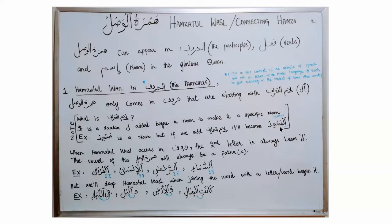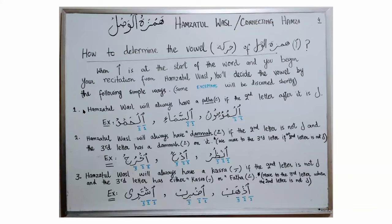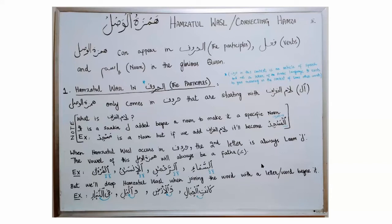Hamzat al-Wassl comes only in khuroof that start with Laam al-Ta'arif, so the second letter after Hamzat al-Wassl in khuroof is always Laam. Going back to our first rule, we always put Fathah on Hamzat al-Wassl if the second letter is Laam. So when Hamzat al-Wassl comes in khuroof, the second letter is always Laam, and the vowel of Hamzat al-Wassl will always be Fathah. For example, Assama'i — Hamzat al-Wassl has a Fathah. In Ar-Rahmani, even if you are not reciting the Laam, this Laam is Laam al-Ta'arif, so you put Fathah on Hamzat al-Wassl because the second letter is Laam.